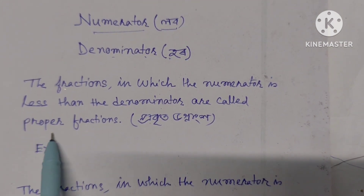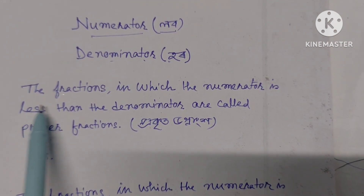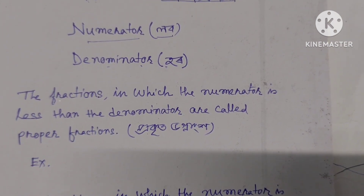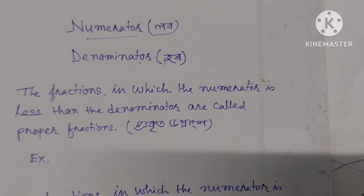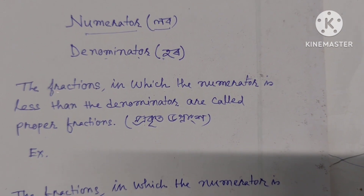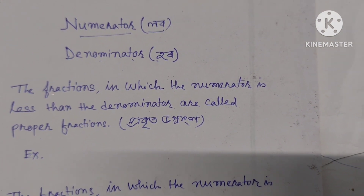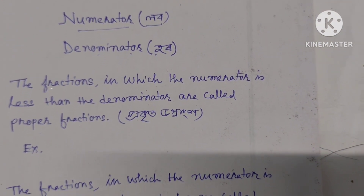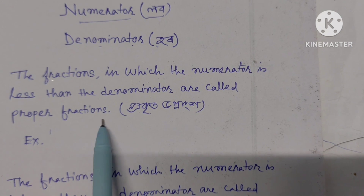Here, the 3 is called the numerator and the 5 is called the denominator. Now let us know about proper fractions. The fractions in which the numerator is less than the denominator are called proper fractions.